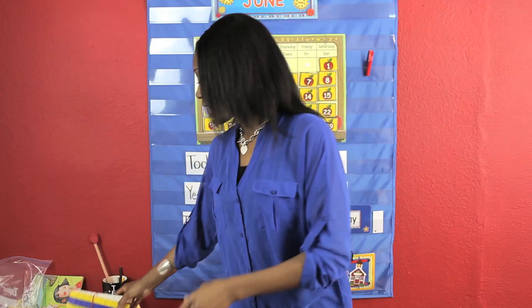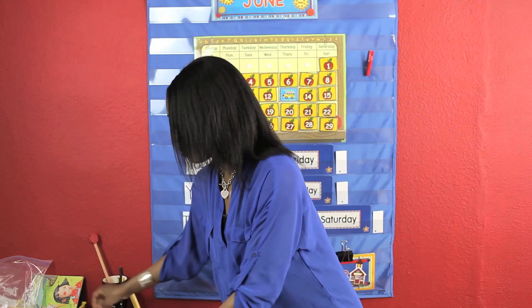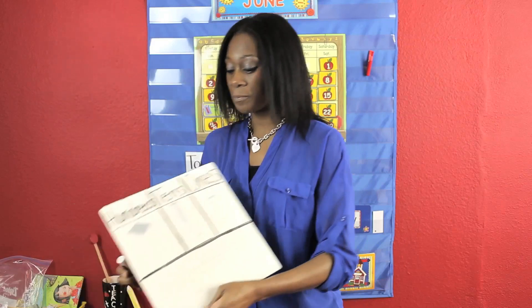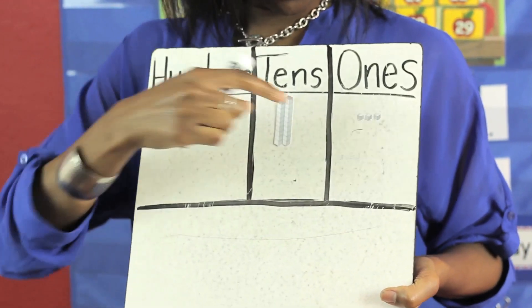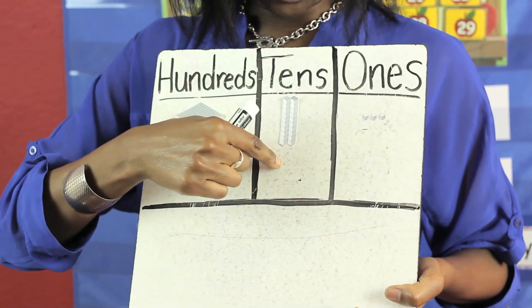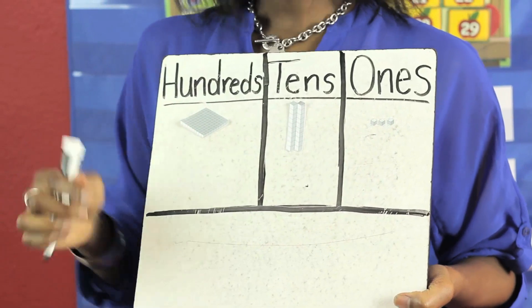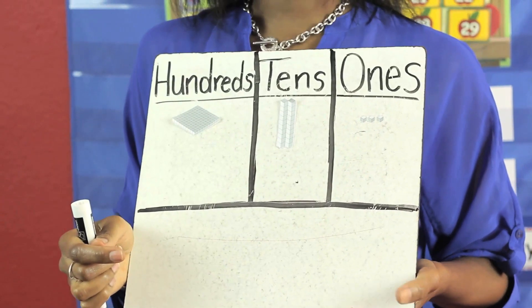Now here I have a lesson on my whiteboard. You want to show the students the place value — the ones, tens, and hundreds column.